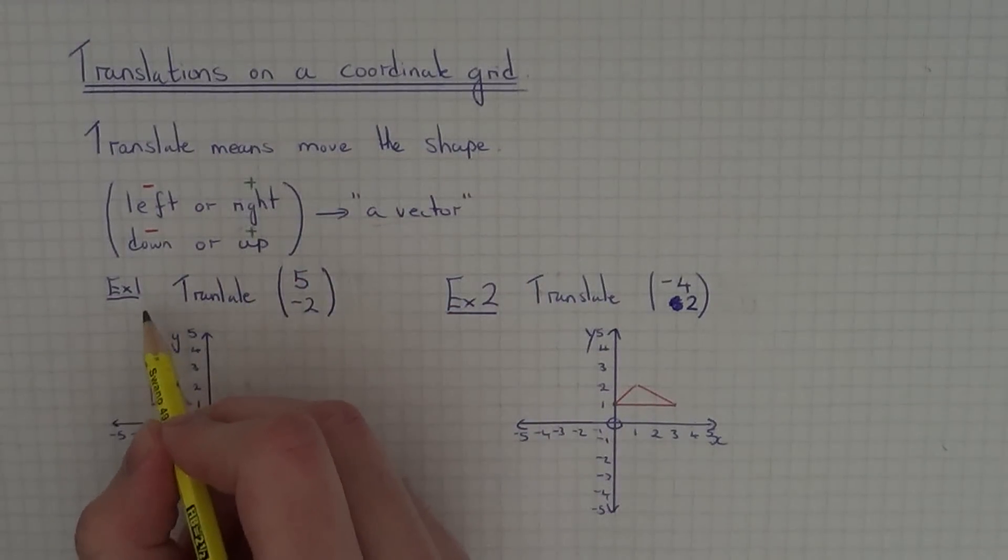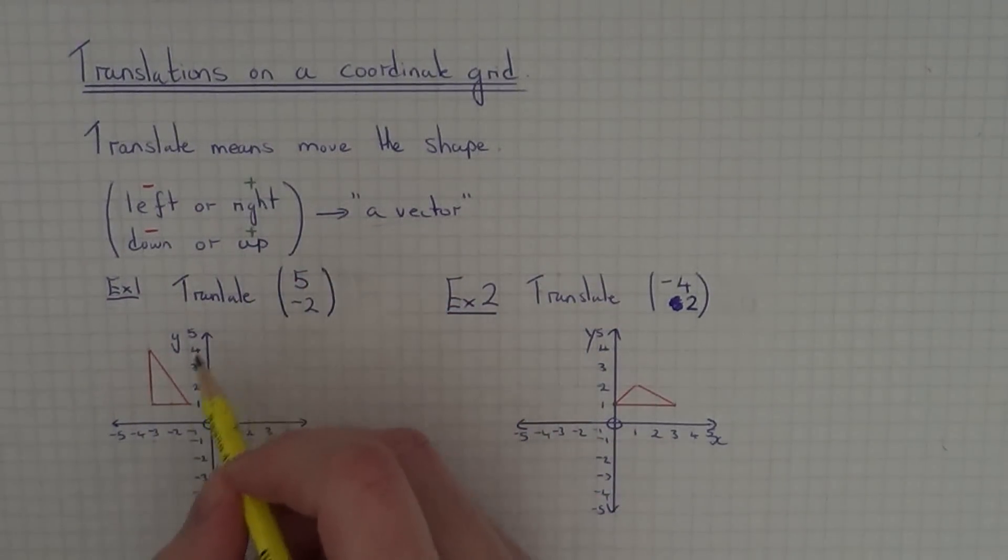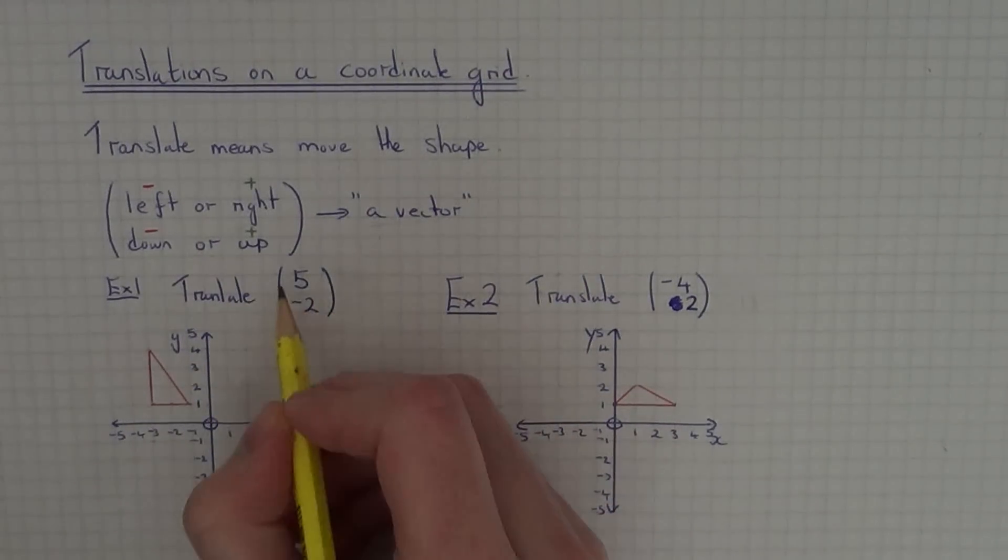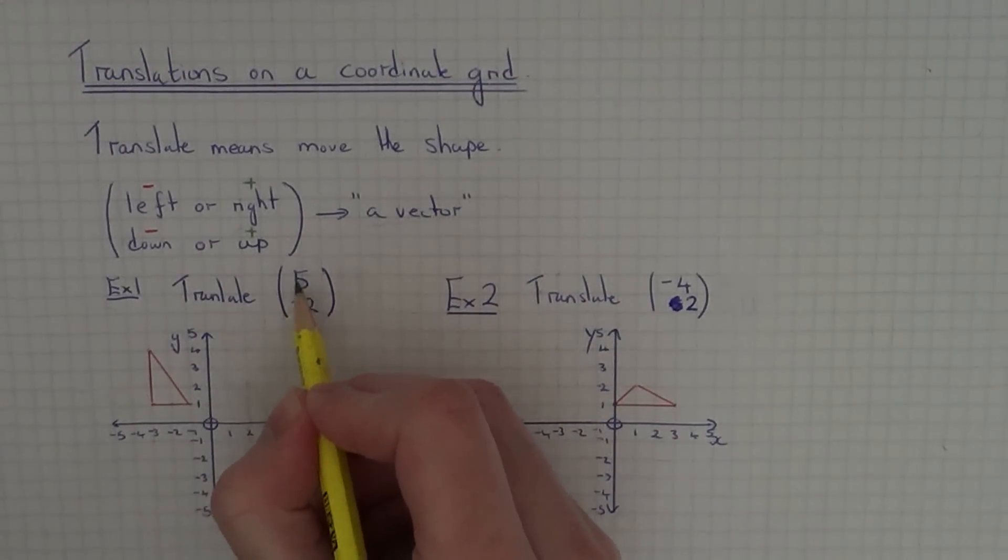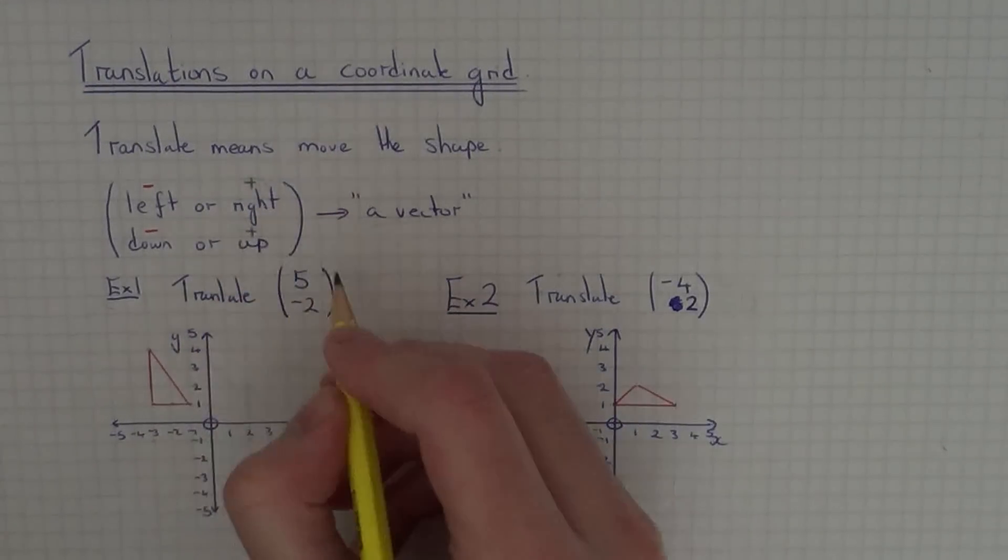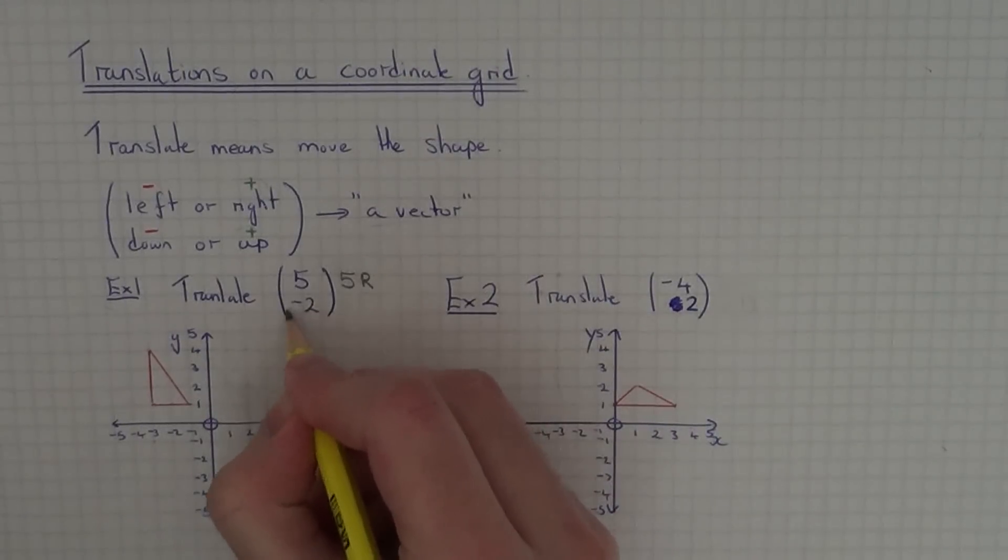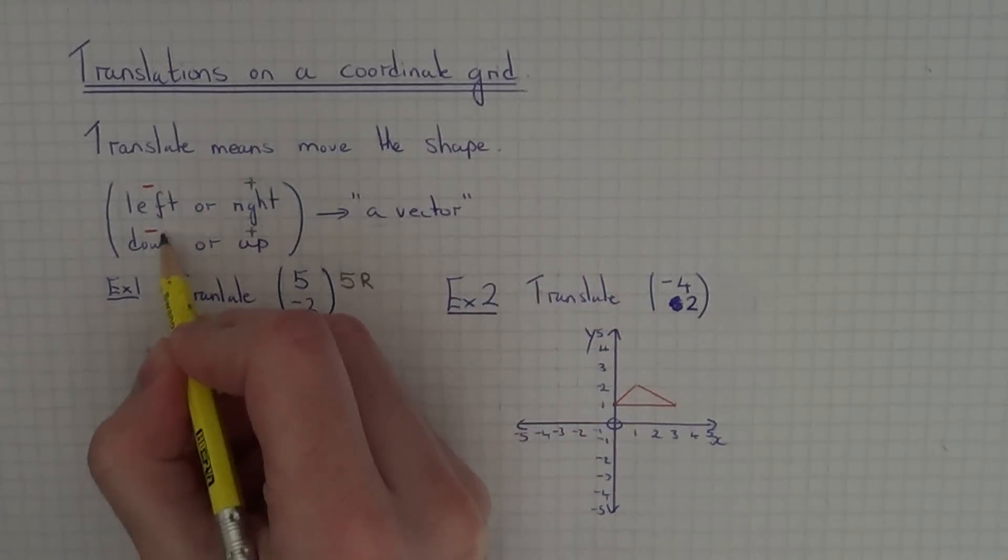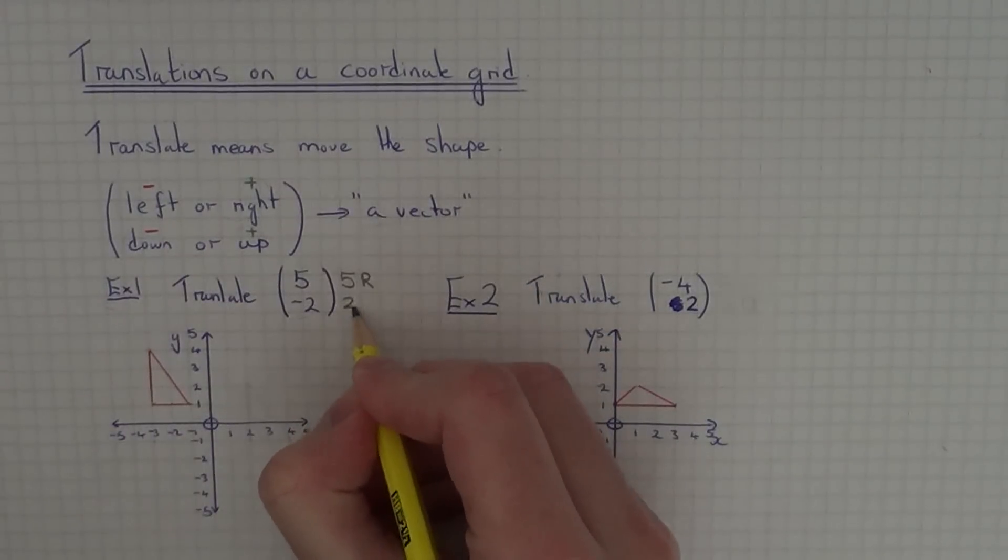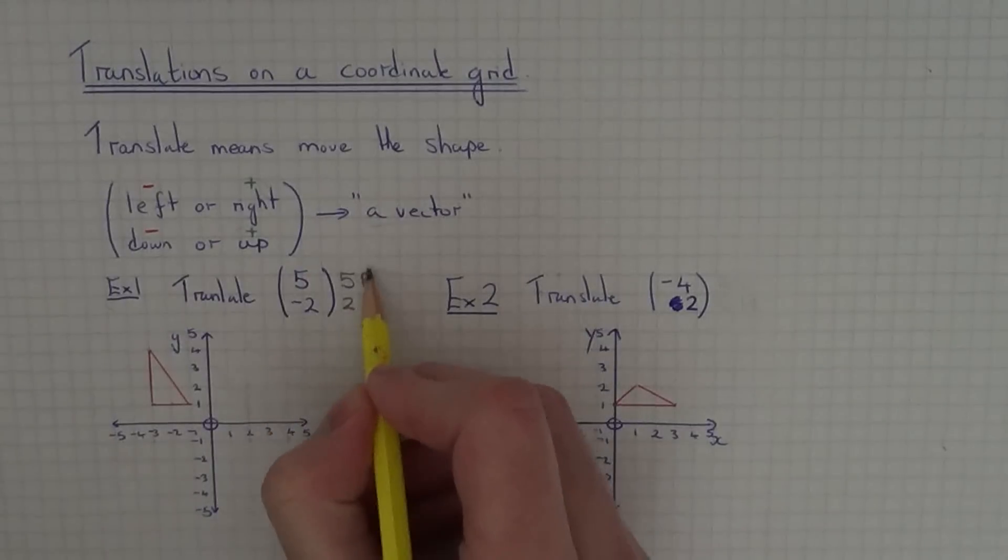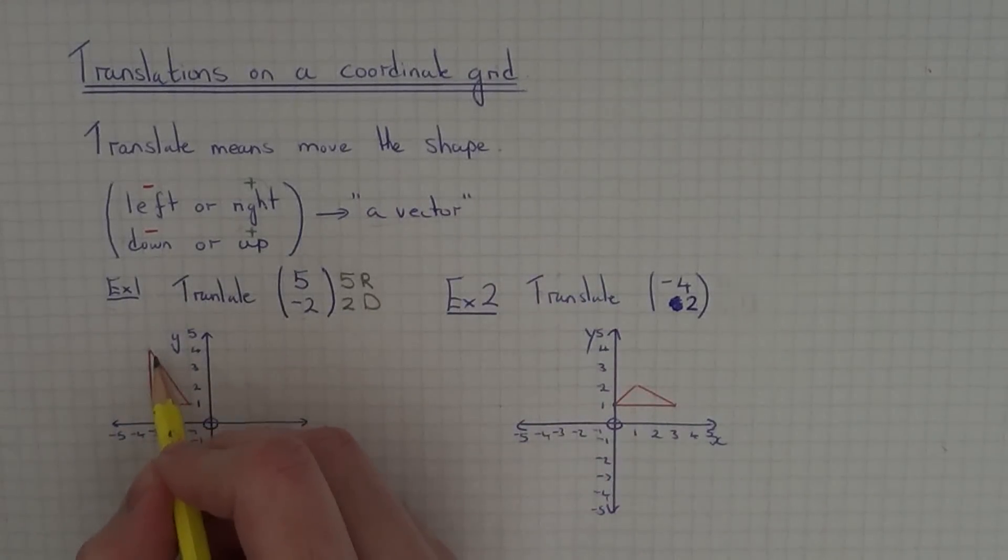So let's look at example 1. We need to translate this triangle by the vector 5 minus 2. The top number is positive 5, so this means we move the shape 5 right. The bottom number is minus 2, so this means move it 2 down. All we need to do now is move each corner 5 squares right and 2 squares down.